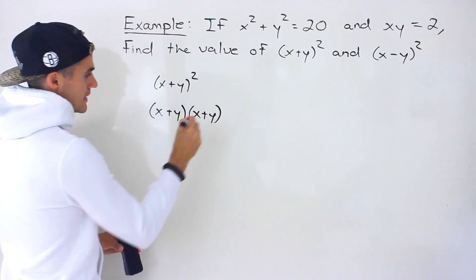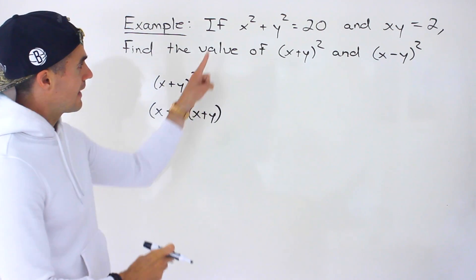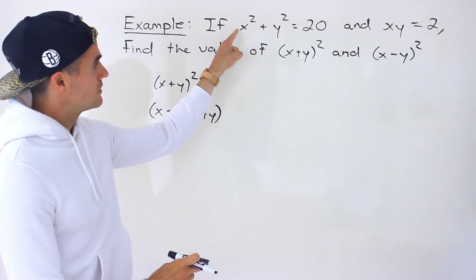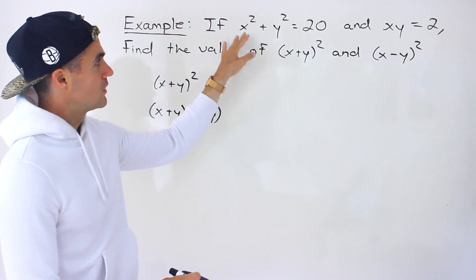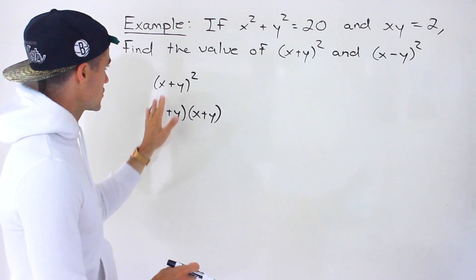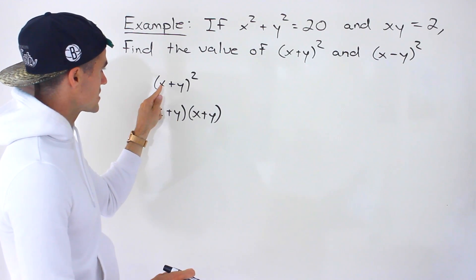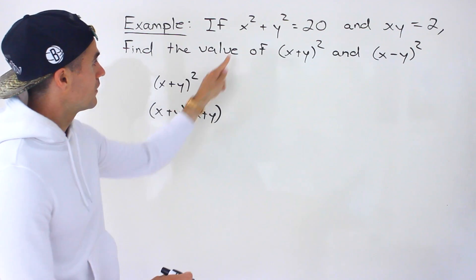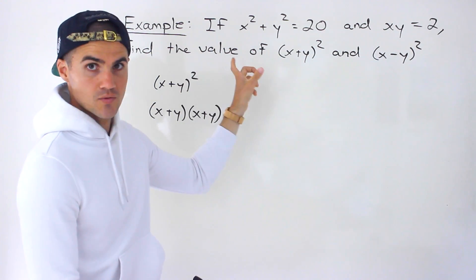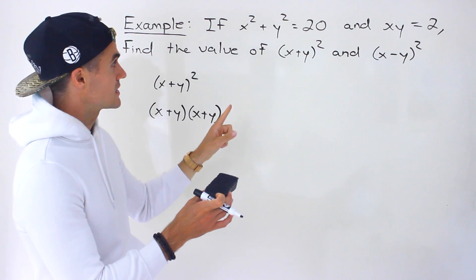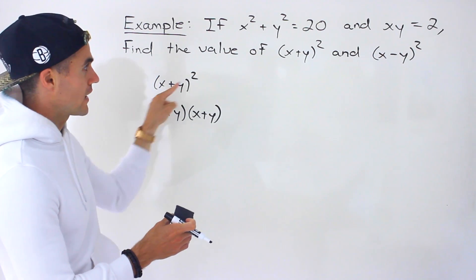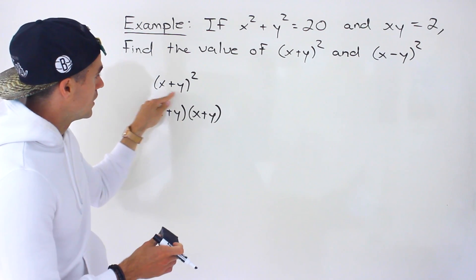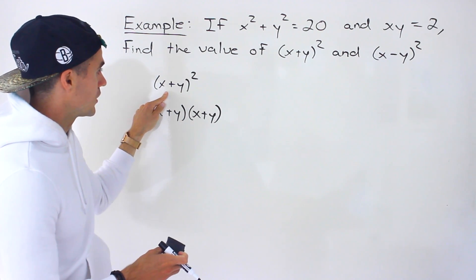The reason why is because notice what we're given: x² + y² = 20 and xy = 2. We can't plug in any of those expressions here because it's just x+y versus x² + y². It's a totally different expression versus what's in the bracket. Notice there's no xy term here.